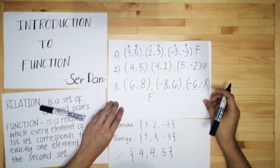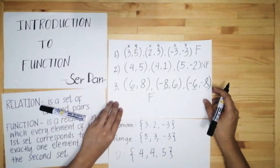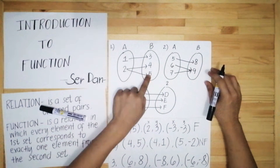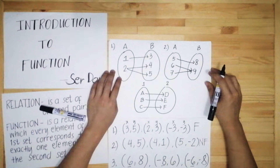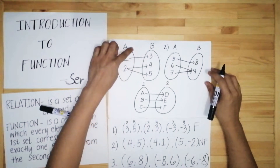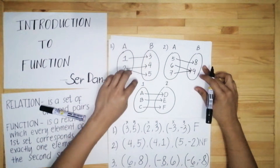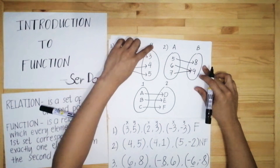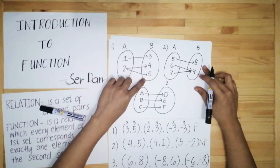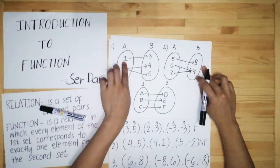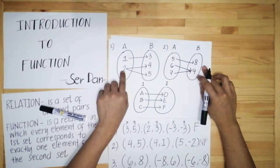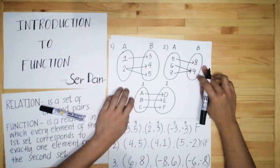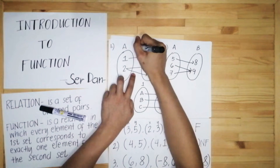Now let's look at diagrams — how to tell if a diagram represents a function or not. We have three diagrams here. In number one, the elements in set A are 1 and 2, and the elements in set B are 3, 4, and 5. Element 1 corresponds to 3, which is fine. But element 2 corresponds to both 4 and 5. When an element in the first set has two or more correspondences, it is not a function.